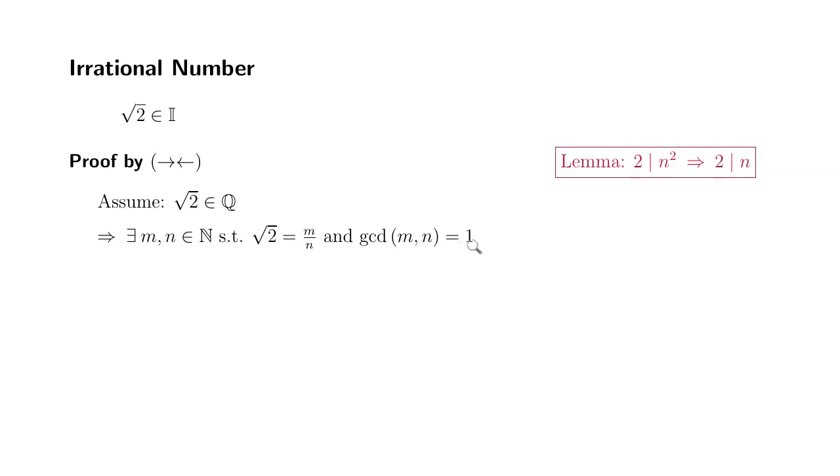Then we're going to add a little bit more extra condition so that the greatest common divisor between the numerator and denominator is equal to 1. So this can be achieved because if greatest common divisor is not 1, then we can simply divide the top and bottom by that number to make sure that the greatest common divisor is 1. So this can be done.